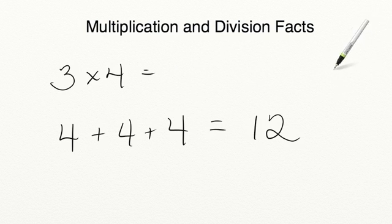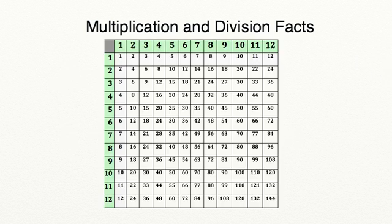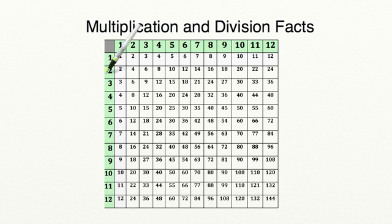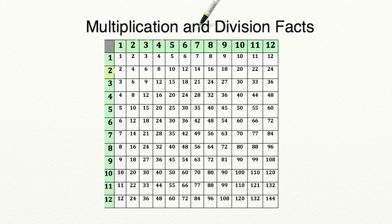One way to do this is using a multiplication chart. We're going to start today by using the multiplication table. To use it, you're going to multiply one of the numbers on the left-hand column, highlighted in green, by one of the numbers in the top row, also highlighted in green. We're going to start with the number 2, multiplying 2 times 1, then by 2, 3, and 4. Look for a pattern as we count together.